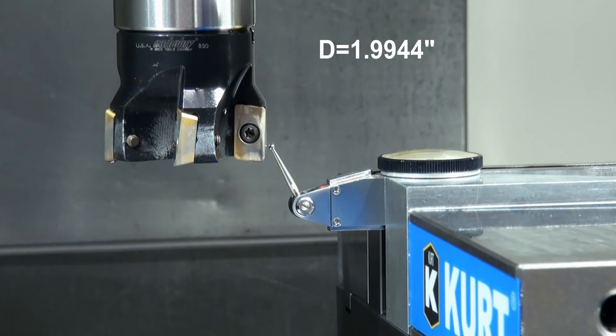But you can see by using this method, you can very accurately and fairly easily measure the diameters of your tools. Now once you have this all set up and zeroed in, now you can just switch tools, bring z up, switch a tool, bring it back down, bring x in. And now you can measure the diameters of a whole bunch of tools at once. Very easy, very accurate way to measure your tool diameter.